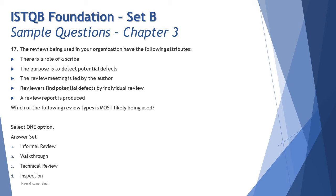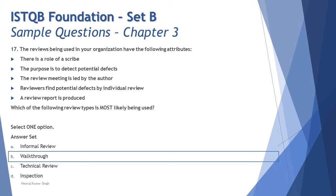Coming back to point three, you should have guessed it — the unique point that the meeting is led by the author. The answer is walkthrough. Walkthrough is a type of review where the author leads the review by calling people to join the meeting and discuss the content. Informal review has no leader at all; technical review has a trained moderator; inspection also has a trained moderator. So for these questions, once you find the unique non-conflicting point, you can pick the right answer immediately. The right answer is B — walkthrough.